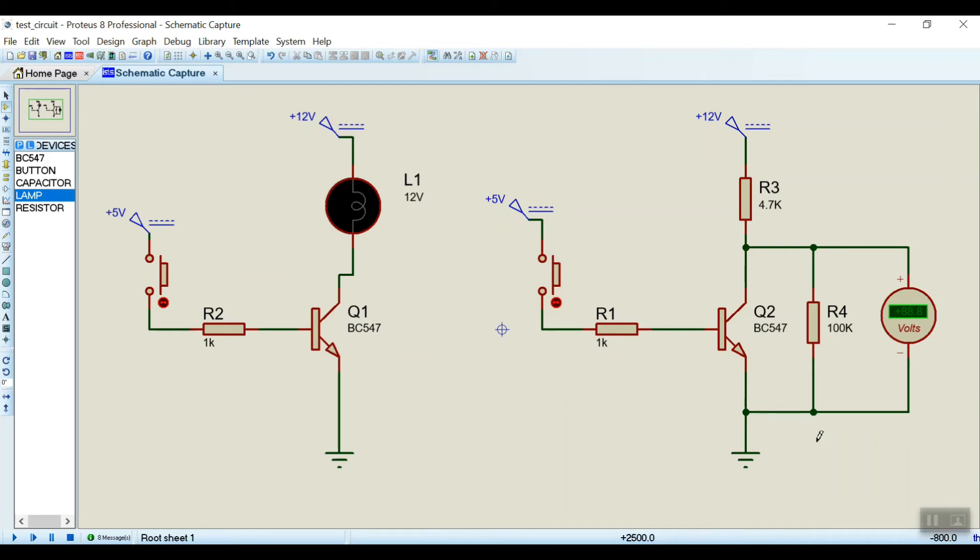So in the left hand side what I have taken is a Q1 that is BC547. This is NPN transistor and this is a 12 volt lamp which is connected between 12 volt and the collector of this transistor. The base is connected to 1k resistance and 1k resistance is connected to 5 volt through a switch or button.